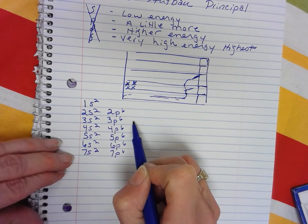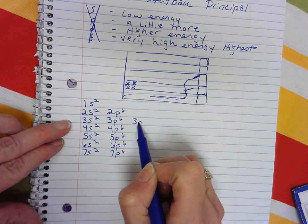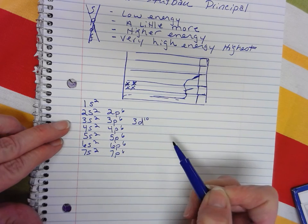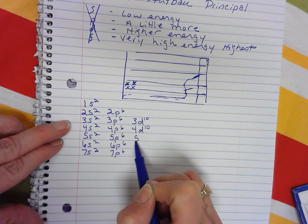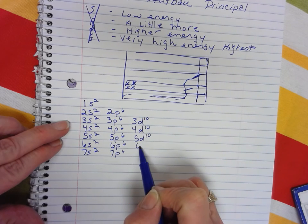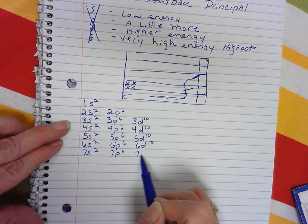Starting with the third, you can put 10 in a d orbital. So you go 3d10, 4d10, 5d10, 6d10, and 7d10.